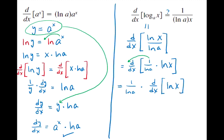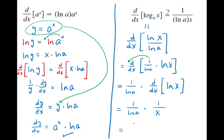We've already shown that the derivative of ln(x) is 1 over x. So this becomes 1 over ln(a) times 1 over x — and combining those two fractions gives us 1 over x times ln(a). That is the derivative formula for log base a of x that we were looking to show.